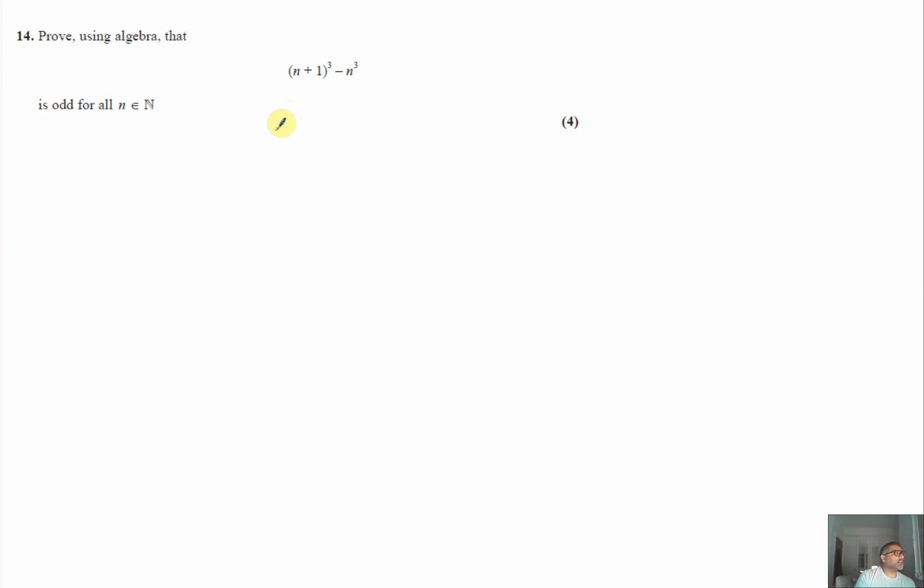Okay, question 14 on the 2023 paper 1 of the EdExcel exam series is a question involving proof. We need to prove using algebra that (n+1)³ - n³ is always odd for all n where n is a subset of natural numbers.